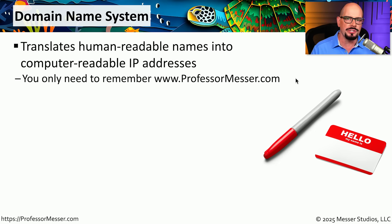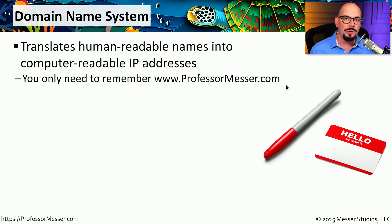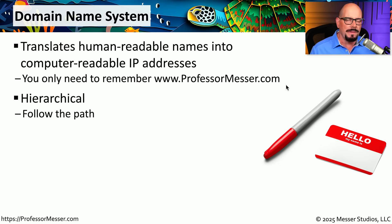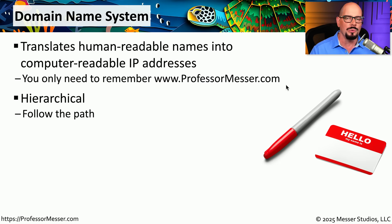a DNS resolution occurs that translates the name www.professormesser.com into the IP address that is associated with that particular web server. This means that we don't have to remember any specific IP addresses — all we have to remember is the name of the server we want to communicate to. Behind the scenes, DNS will make sure that we're able to connect to that IP address. DNS provides this resolution and many other features as well, some of which we'll learn about in this video. This DNS database is a hierarchy that allows us to find the IP address of any fully qualified domain name on the worldwide internet.